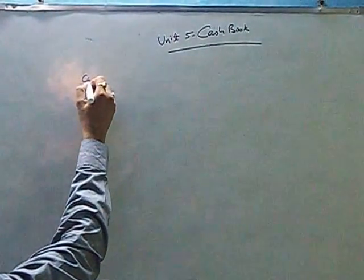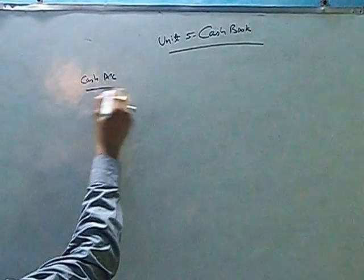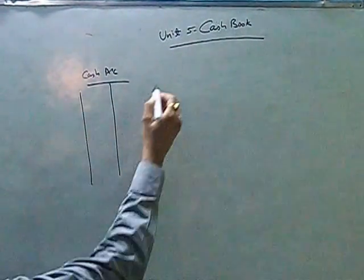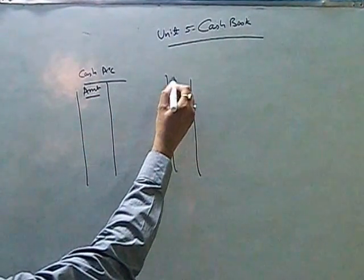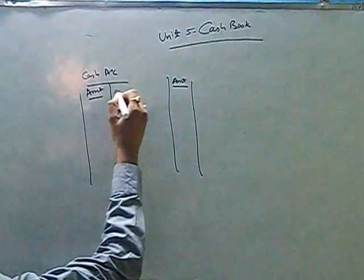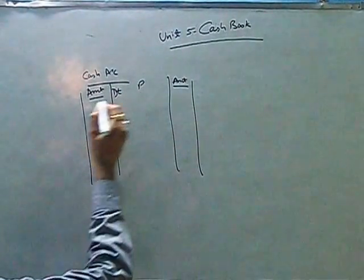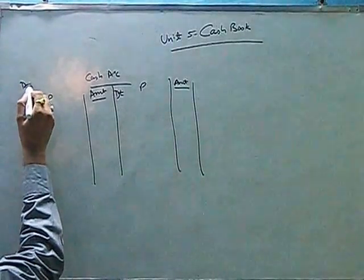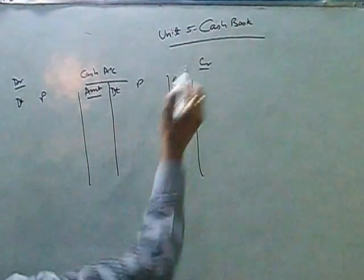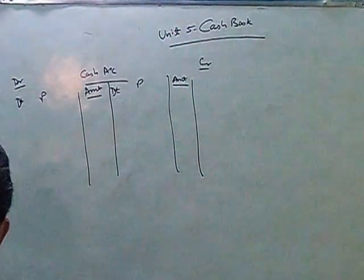Cashbook, if you prepare the cash account, is just like another form of account. We have seen ledger accounts like this. And we have given examples of cash accounts earlier also. Here will be date, particulars, amounts, date, particulars, amounts. This is a debit side, this is a credit side. And as per the golden rules of account, we know that cash is an asset.